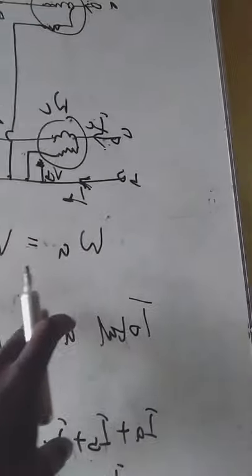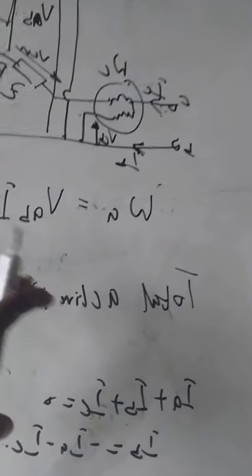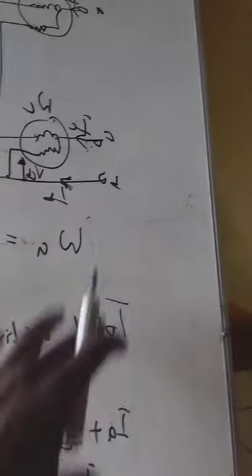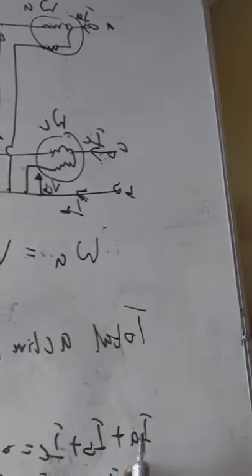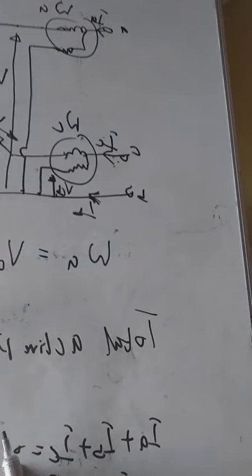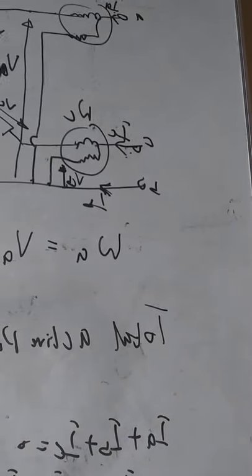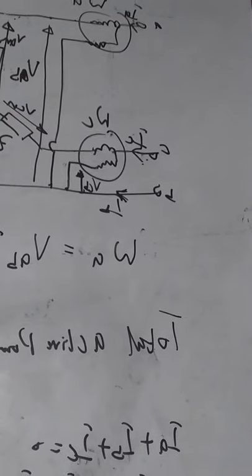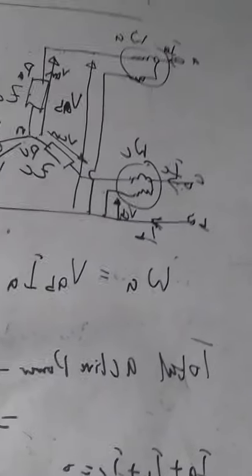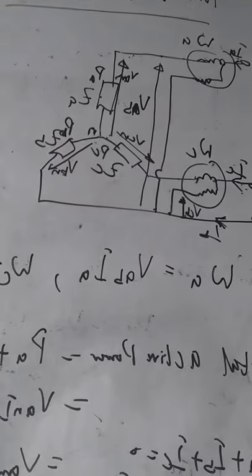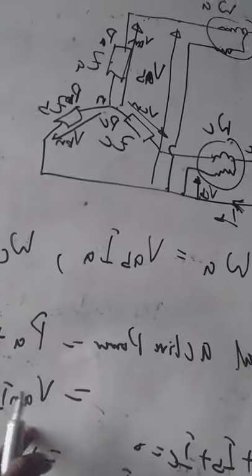In any three-phase system that is star connected and balanced, we have IA plus IB plus IC equal to zero. So IB can be taken as subject of formula: IB equals minus IA minus IC. So when we substitute for IB here...